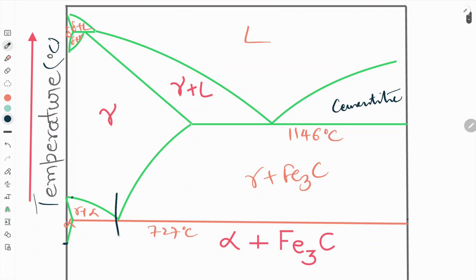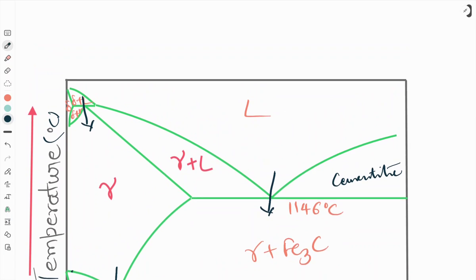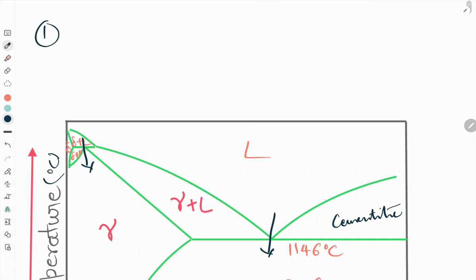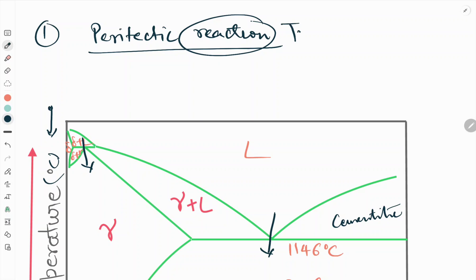In this diagram there are three reactions: one is this, second is this, third is this one. So basically there are two reactions and one is transformation. We will talk about all three. Generally we call them invariant reactions. The first one is peritectic. We will start from top to bottom: peritectic reaction.